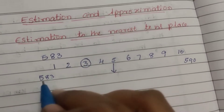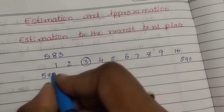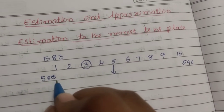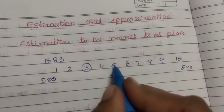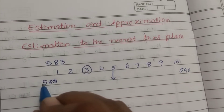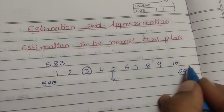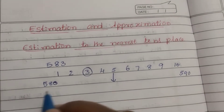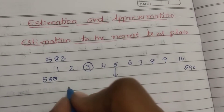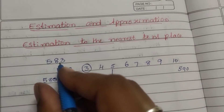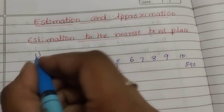So, 5, 80. Estimation is one of the most important things. So, 583 rounds to 5, 80. This is the first example.